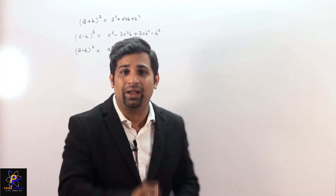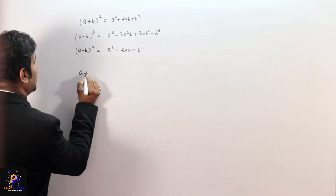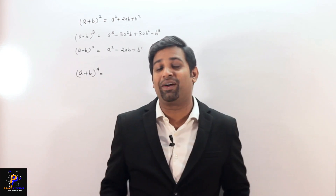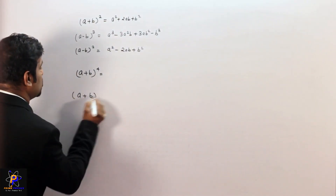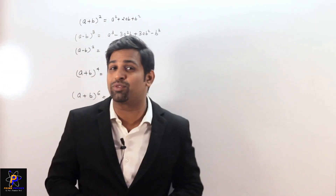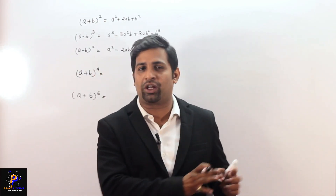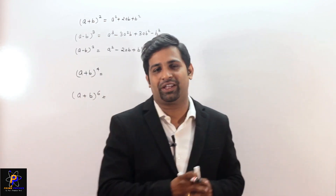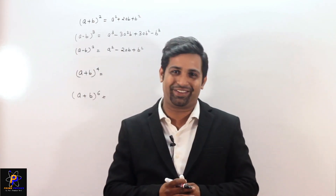Now, if I write (a+b) raised to 4, it will take a little time. Or (a+b) raised to 6, it will take even more time. So for these problems, we use a method. I don't know the exact name right now — we will study it in detail later. But first, let us learn it with a shortcut: how do we handle (a+b) raised to 4 or (a+b) raised to 6?